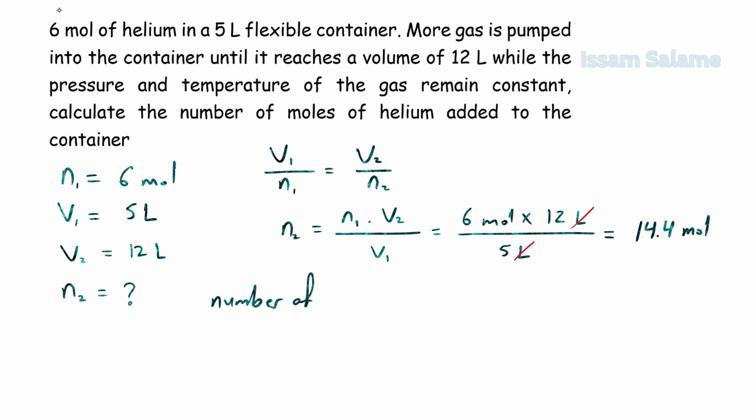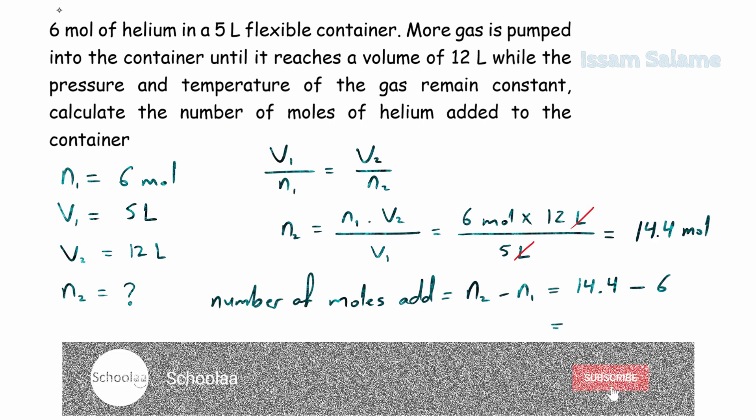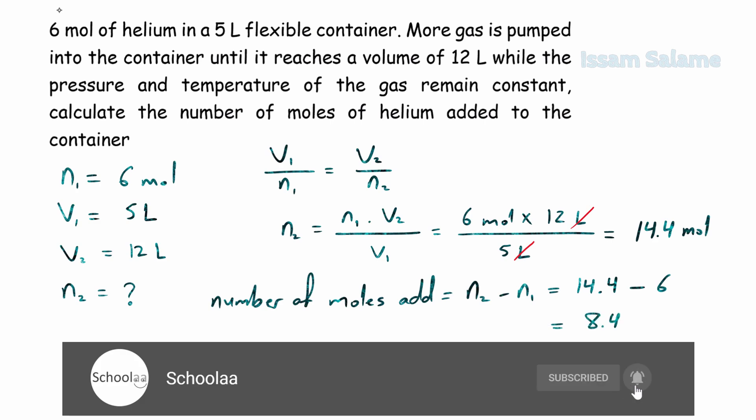To find the number of moles added, we should deduct the number of moles initial from the final number of moles. So 14.4 moles minus 6 moles, the number of moles added is going to be 8.4 moles.